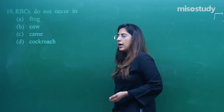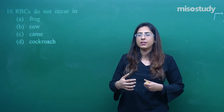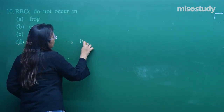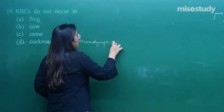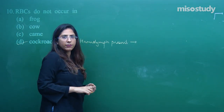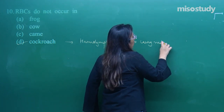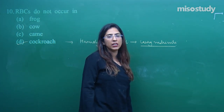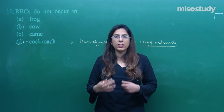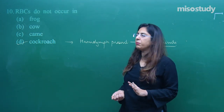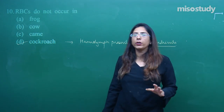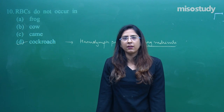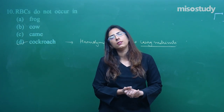Question number ten: RBCs do not occur in — RBCs, the red blood cells, are not present in cockroaches. Cockroaches have hemolymph instead, which carries nutrients and supplies them to various body parts. It does not act as a respiratory pigment. Cockroaches have well-defined trachea and spiracles through which they can respire properly. With this, let's wind up the session. Hope all 10 questions are understood. We'll be discussing a new chapter in the next session. Do revise everything. Thank you so much, students!